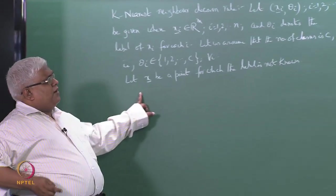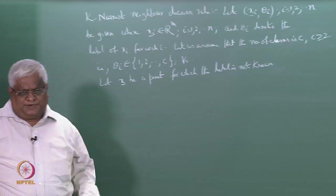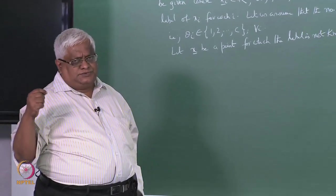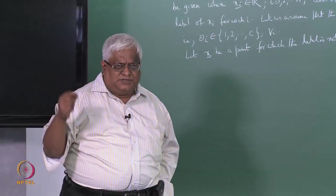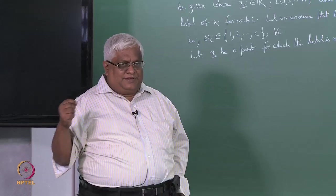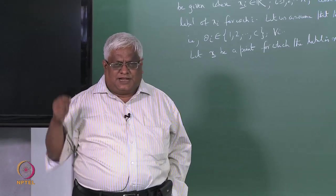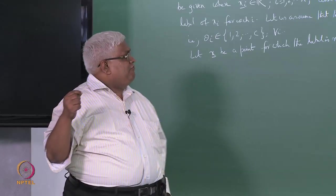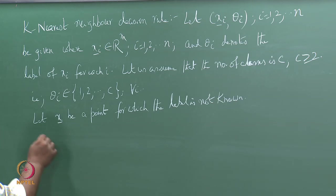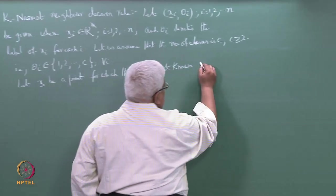Let x be a point for which the label is not known — that is, the class to which x belongs is unknown. The basic problem is: how do we get the label of x from x1, x2, ..., xn? The procedure is the following: we need to find the label of x.